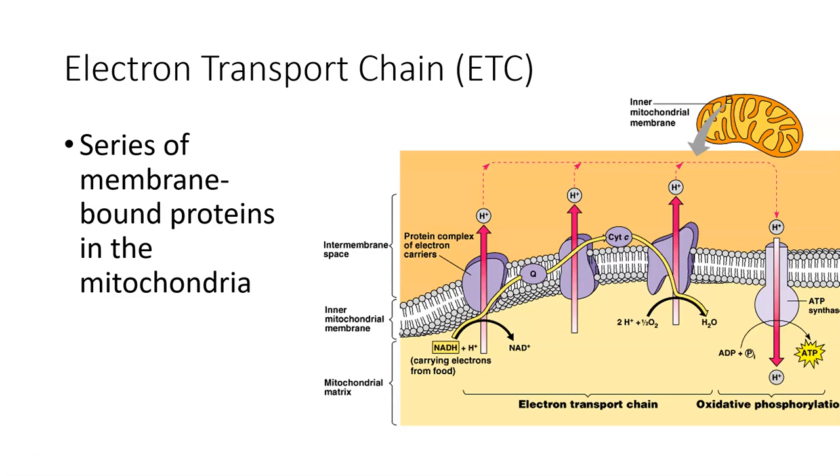The electron transport chain is essentially these proteins that follow in a series, one by one by one. And what they do is they have a big job in helping to transfer electrons from one protein to the next.